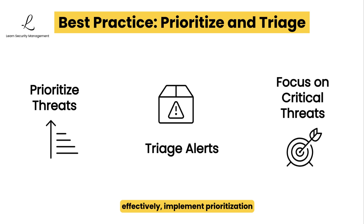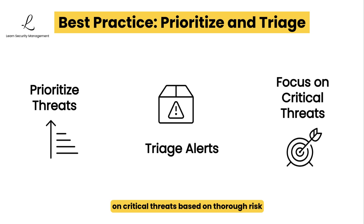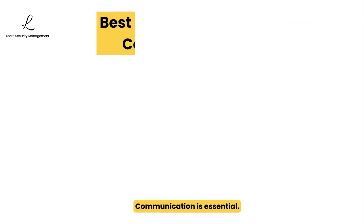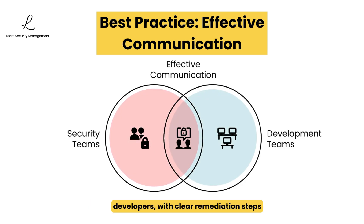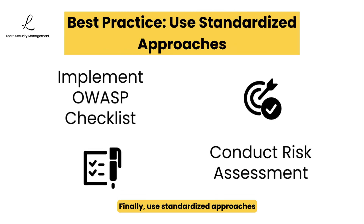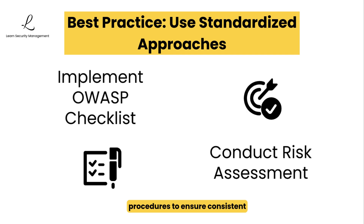To manage the flood of findings effectively, implement prioritization and triage processes. Focus on critical threats based on thorough risk assessment to avoid alert fatigue and ensure the most dangerous issues get fixed first. Communication is essential — create efficient workflows for passing vulnerability information between security teams and developers, with clear remediation steps and verification procedures. Finally, use standardized approaches like the OWASP Application Security Checklist and structured risk assessment procedures to ensure consistent and thorough testing coverage across your applications.